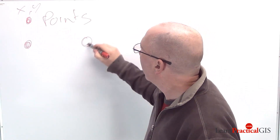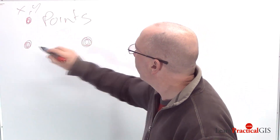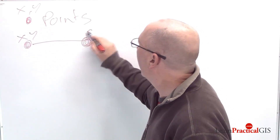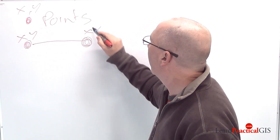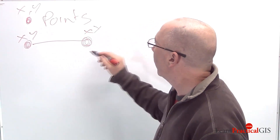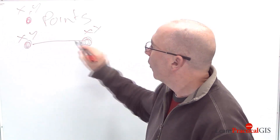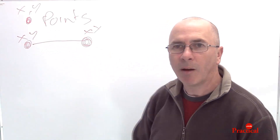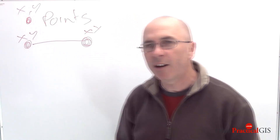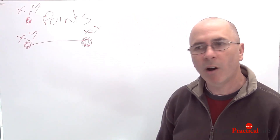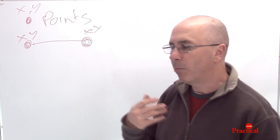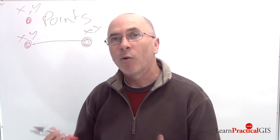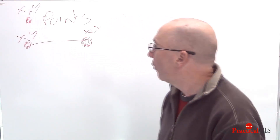We have lines, which are XY coordinates joined to and defined as being a line. This might be a road, a railway line, a river, or some other sort of feature.